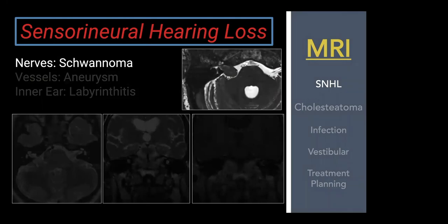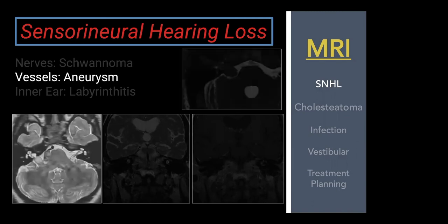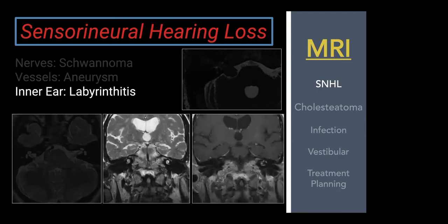What do we find when something is abnormal in sensorineural hearing loss? Most commonly, a vestibular schwannoma — the thing we're evaluating for in asymmetric SNHL. Rarely, an aneurysm from the AICA branch coursing near the IAC. And labyrinthitis: on T2, we see normal fluid signal in both cochleae bilaterally. But on post-contrast T1, the left cochlea enhances entirely while the right doesn't. Since we shouldn't see enhancement within the inner ear structures, this enhancement is compatible with labyrinthitis.